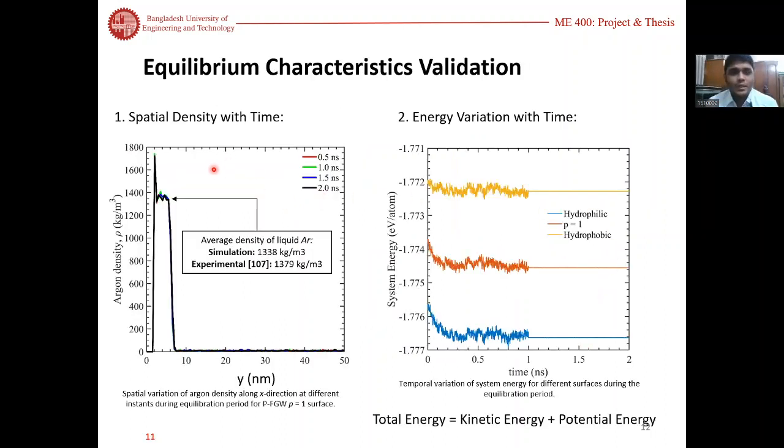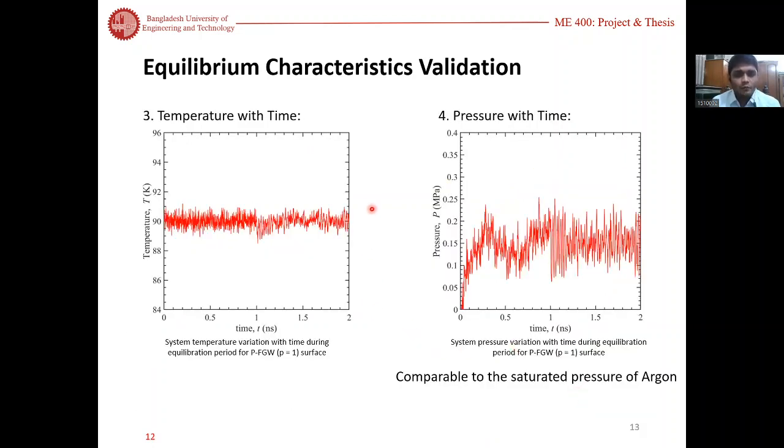For the validation of equilibrium characteristics, we use argon and see that the density of argon is found close with the experimental value. System energy was also fixed after a time. Total energy was found from the kinetic energy and the potential energy. From the temperature we see that it was fluctuating around 90 Kelvin, and the pressure was fluctuating around 0.07 to 0.25 megapascal, which is the saturated pressure of argon.